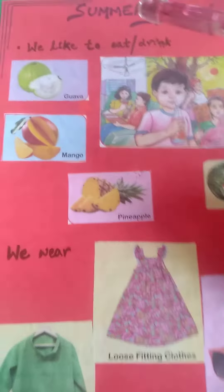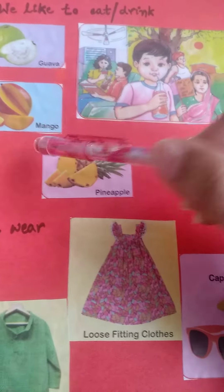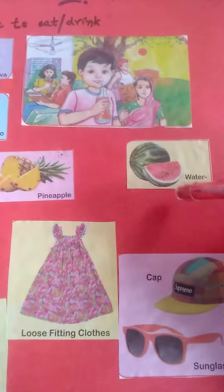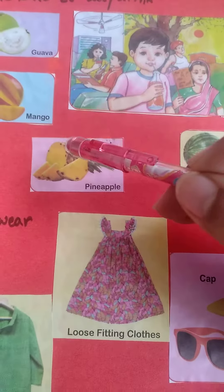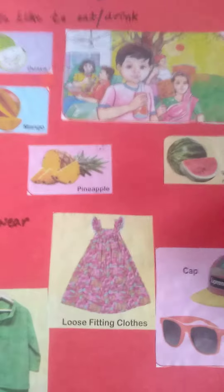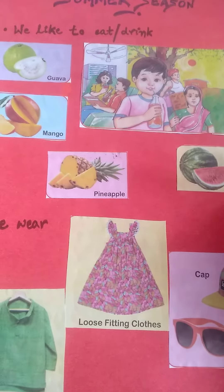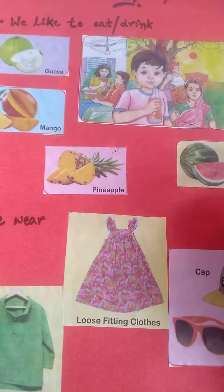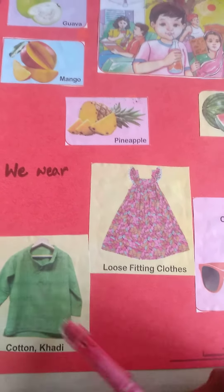In summer season we like to eat or drink some special things like guava, mango, pineapple, watermelon, cold drinks, mango shake, and fruity. Children specially like ice cream. In summer season we wear cotton clothes, khadi clothes, and loose fitting clothes.